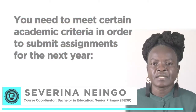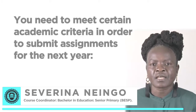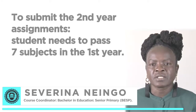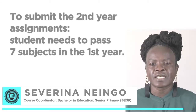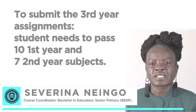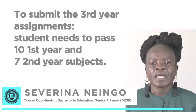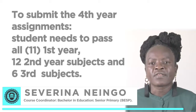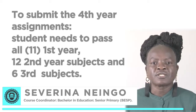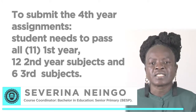You need to meet certain academic criteria in order to submit assignments for the next year. To submit second year assignments, a student needs to pass seven subjects in the first year. To submit the third year assignment, a student needs to pass ten first year and seven second year subjects. To submit the fourth year assignment, a student needs to pass all eleven first year, twelve second year subjects, and six third year subjects.